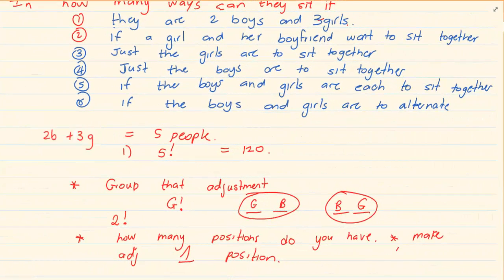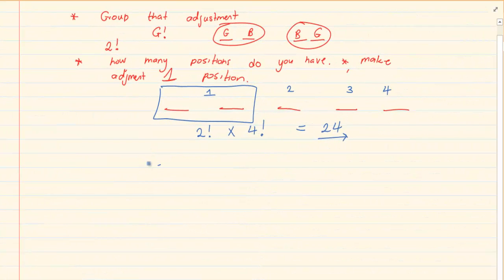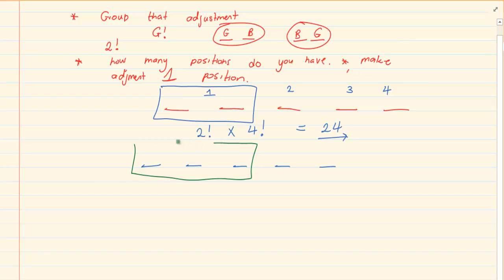Let's take the next one. It says that just the girls are to sit together. We have three girls. We know we have five positions. The girls want to sit together, so that is three spaces we are joining and making one. So we have three positions total, meaning the adjustment is three factorial. But we must also do a factorial for the group — how many in the group? Three. So the final answer is three factorial times three factorial, which is equal to 36 different positions.